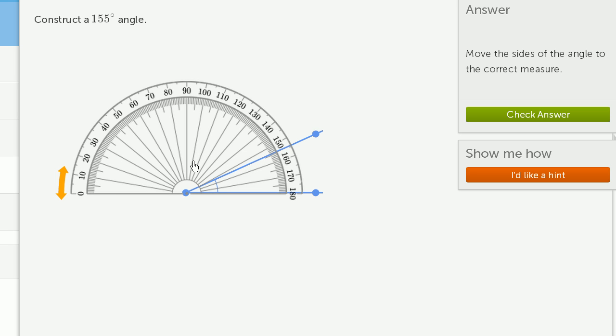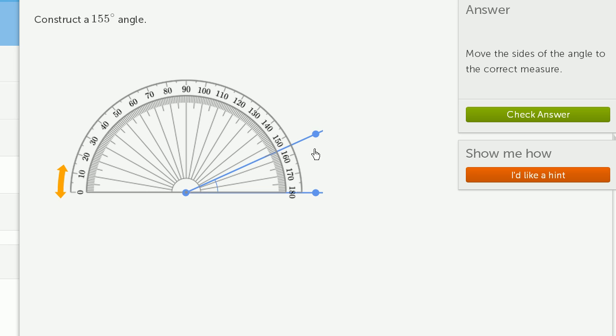And now, that seems pretty good. Now let's take one ray and put it at 0 degrees. And then let's take the other one and put it at 155. So once again,